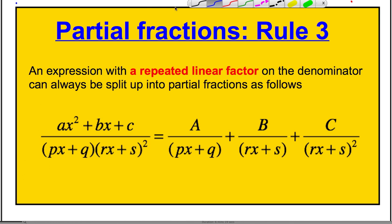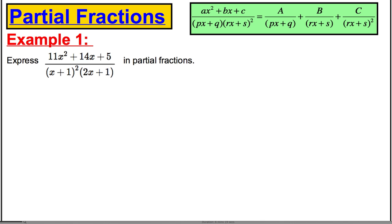Let's do an example straight away. Example one: we want to express the following in partial fractions. We're in the case talked about — we've got a quadratic on top, a cubic on bottom, so the top has a smaller order than the bottom. Two x plus one is one factor, and x plus one appears twice — two repeated linear factors.